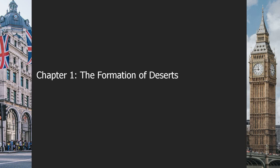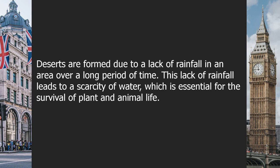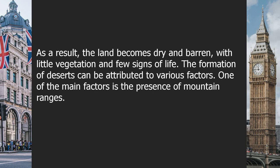Chapter one: The formation of deserts. Deserts are formed due to a lack of rainfall in an area over a long period of time. This lack of rainfall leads to a scarcity of water, which is essential for the survival of plant and animal life. As a result, the land becomes dry and barren with little vegetation and few signs of life.